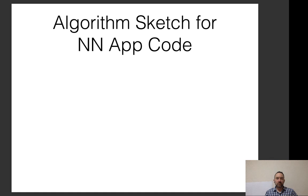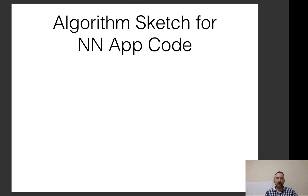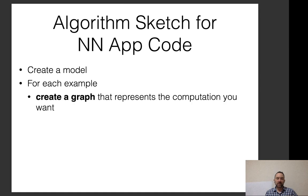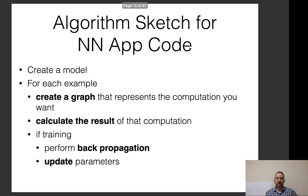For example, we talked about the deep CBOW model several times before, where we basically look up word embeddings, sum them together, run them through a couple layers of affine transforms and non-linearities, and then finally calculate our scores. On a more abstract level, the algorithm sketch for a neural network app looks like this: we create a model and set the model parameters, then for each example we create a graph representing the computation we want to do, calculate the result of that computation, and if we're training, we perform backpropagation and update our parameters.